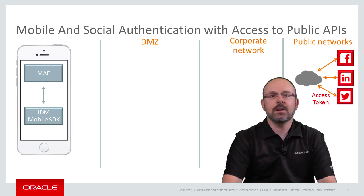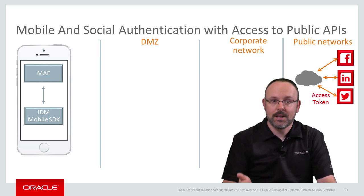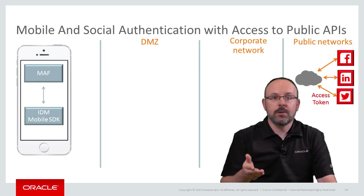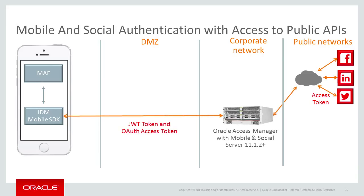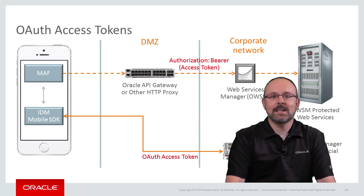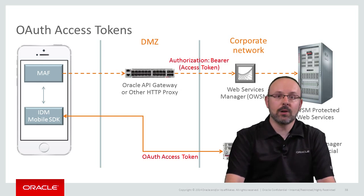MAF applications do not necessarily need to access internal web services — they can rely exclusively on cloud-based APIs. In that case, the JWT token will be used only between OAMMS and the MAF application, and all service calls will use the OAuth access token returned by the third-party authentication service. Traffic to cloud-based authentication services should normally transit through the DMZ, and this is also the case for service calls to web APIs if the device is connected to the corporate network. Oracle Access Manager Mobile and Social supports both OAuth and JWT tokens, as does Oracle API Gateway.